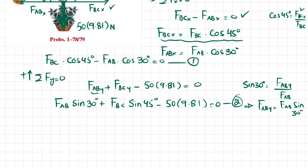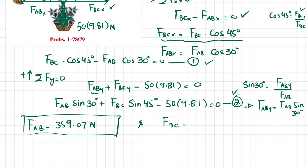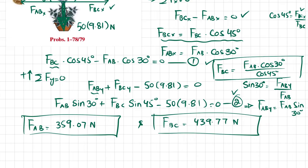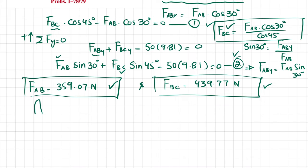Solving equations one and two as simultaneous equations, you get F_AB equals 359.07 newtons and F_BC equals 439.77 newtons. From equation one, F_BC equals F_AB·cos(30°) divided by cos(45°). Substituting back gives F_AB in terms of known values, then F_BC follows. Now we move forward to find the allowable normal stresses.